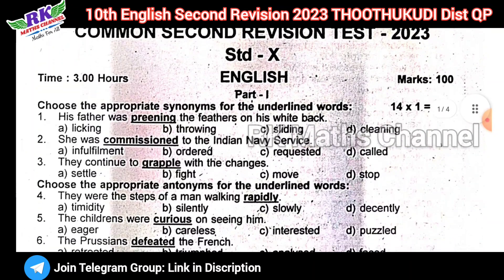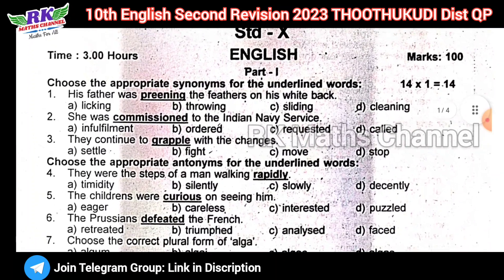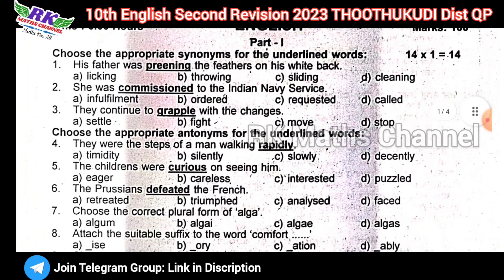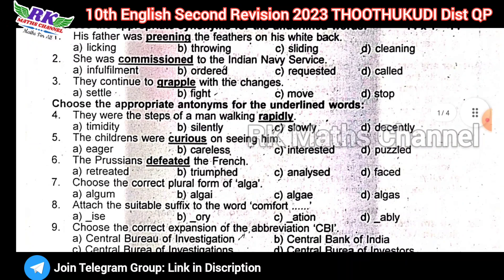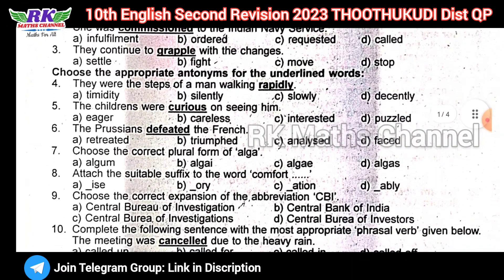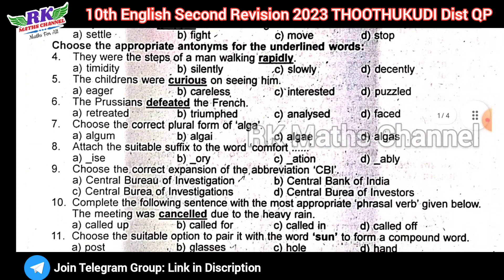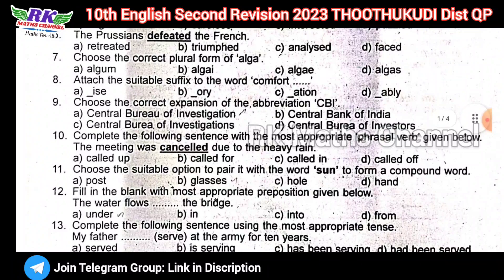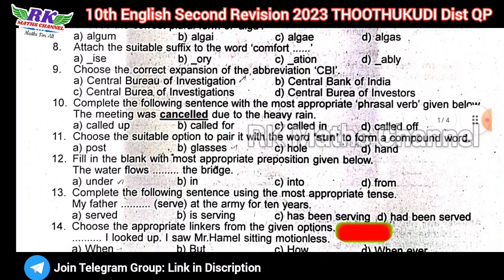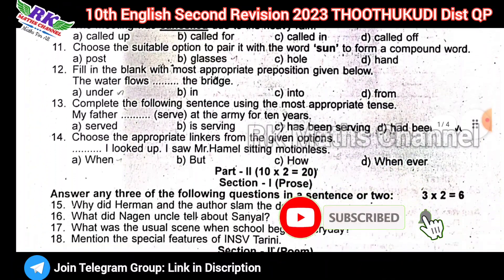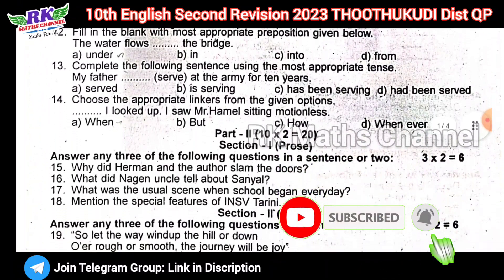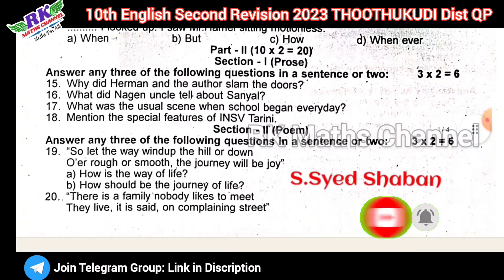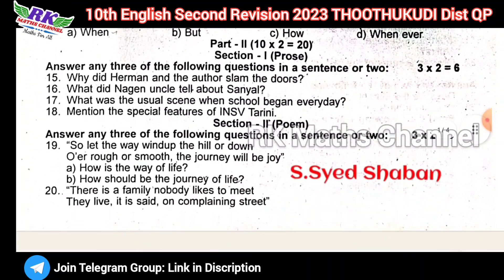Before we look at the question paper: first, 100 marks total, 14 bits. Total of 100 marks, first 14 bits. Next, Part 2 — we look at the question paper, two more questions.